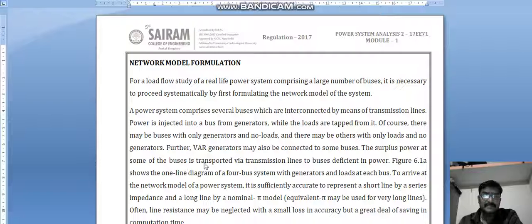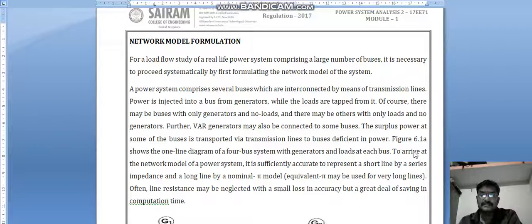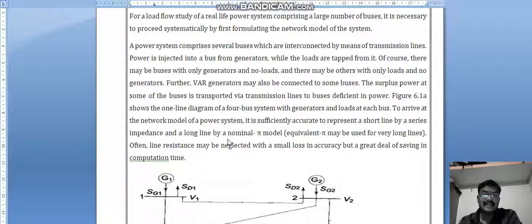The surplus power at some of the buses is transported via transmission lines to buses deficient in power. Figure 6.1a shows the single line diagram of a four bus system with generators and loads at each bus.